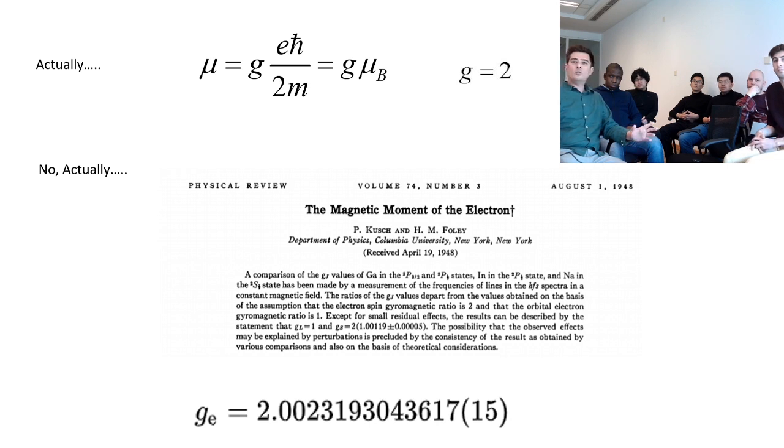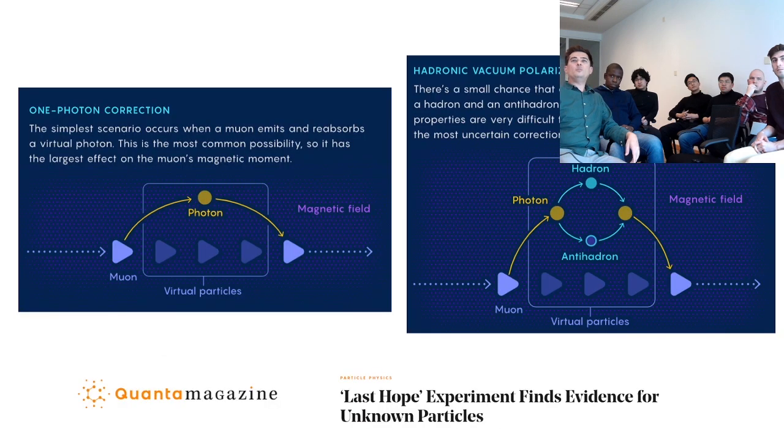But if you actually do an even more accurate measurement then it turns out to be something a little bit away from 2m. So this was first done for the electron in 1948 and they found that it's a little bit above 2m. And why is it above 2m?